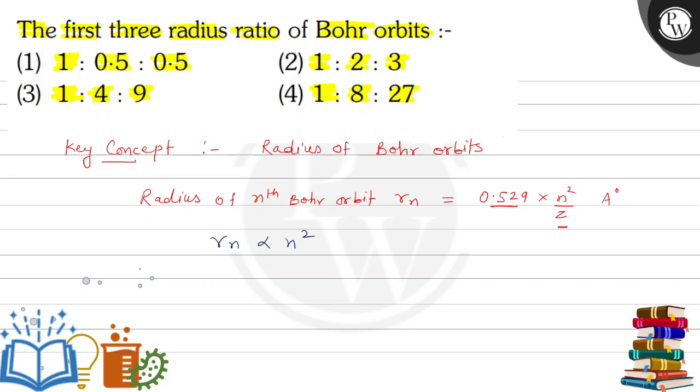So here we can write that r1 ratio r2 ratio r3. First 3 orbital, n ki value ragdi humne 1, then 2, then 3. And this is equals to 1 is to 4 is to 9. This is the ratio of first 3 Bohr orbits. 1 is to 4 is to 9.